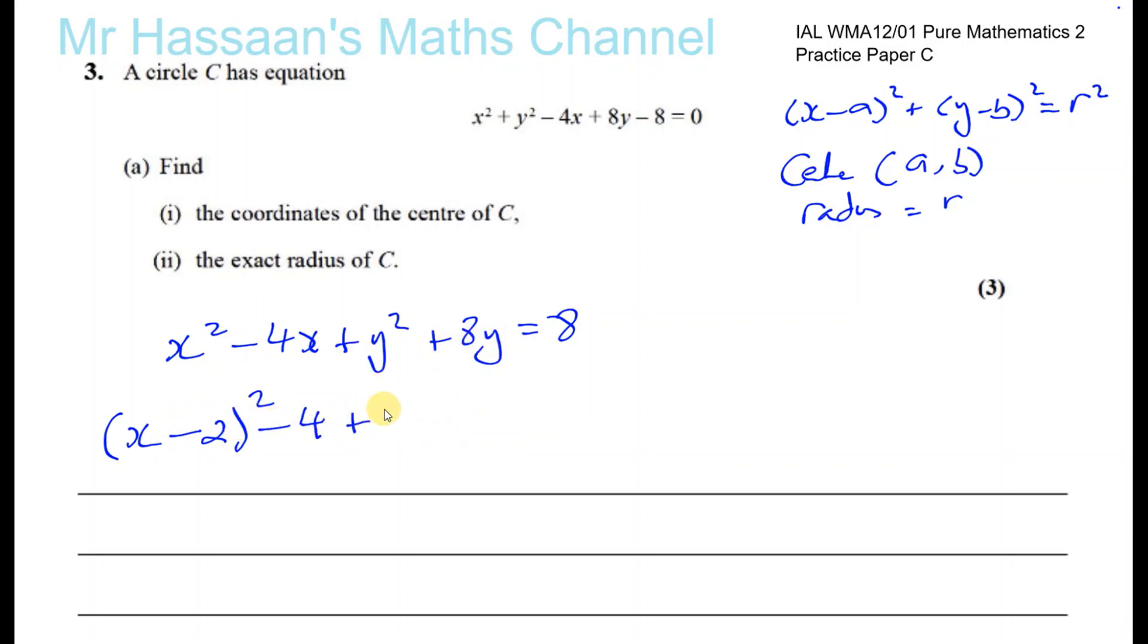Similarly for this, I'm going to have a square bracket. I'm going to put y plus half the coefficient, which is going to be 4. Now that's going to give me y squared plus 8y plus 16. I don't want the plus 16, so I've got to take away 16.